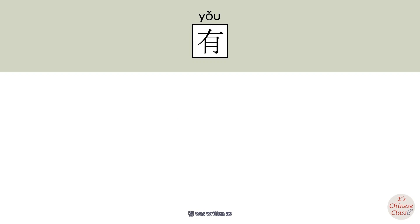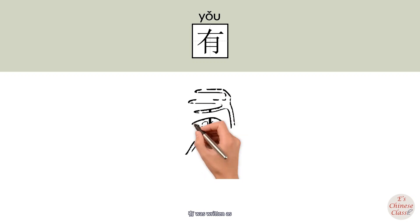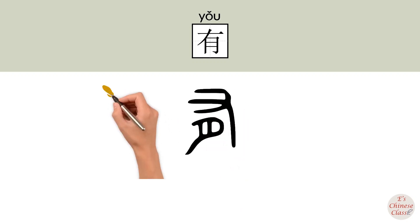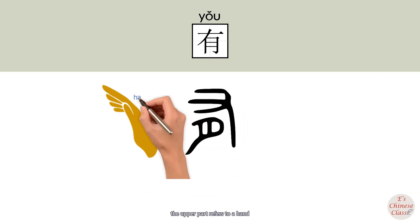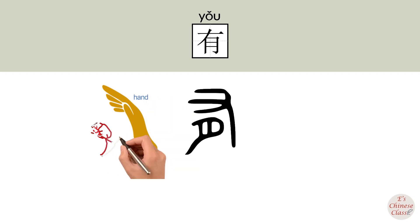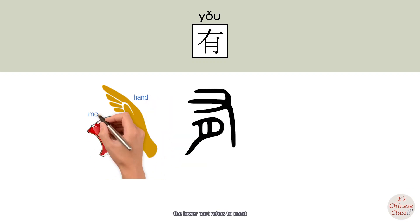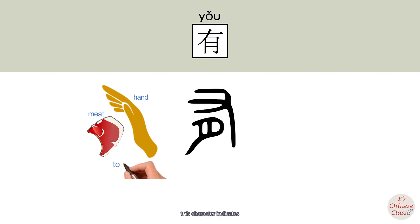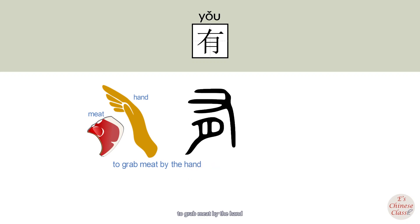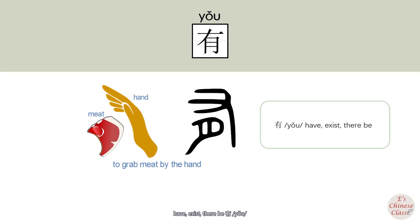In ancient Chinese, 有 was written differently. The upper part refers to a hand and the lower part refers to meat. This character indicates grabbing meat by hand. So the original meaning of 有 is 'have,' 'exist,' or 'there be.'